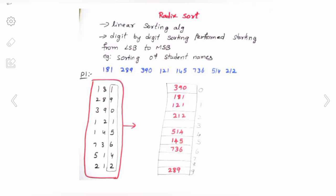This is digit-by-digit sorting, starting from the Least Significant Bit (LSB) to the Most Significant Bit (MSB). This is the method of sorting technique used in card sorting machines, which are ancient machines now found only in museums.